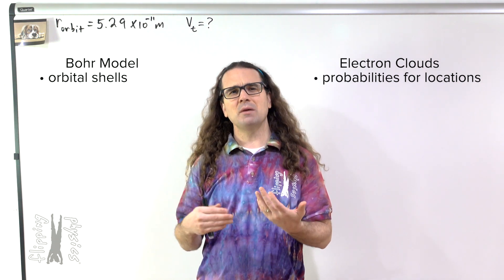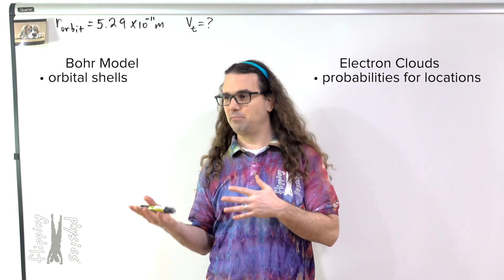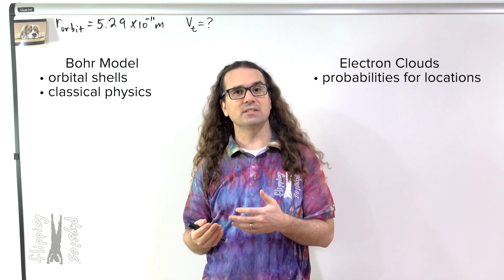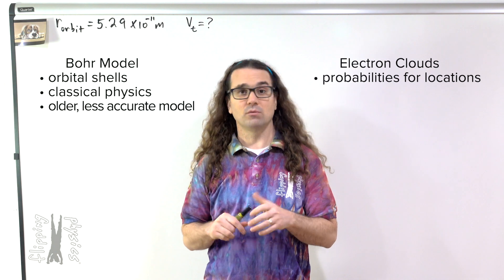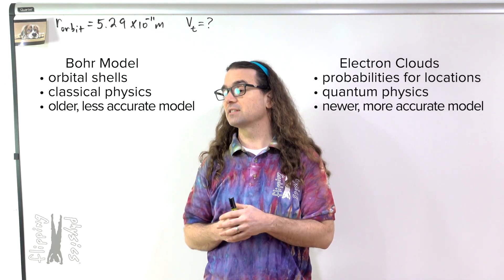The Bohr model of the atom with electrons in orbital shells is from classical physics and is an older, less accurate model of an atom. Older than the newer, more accurate electron clouds from quantum physics.